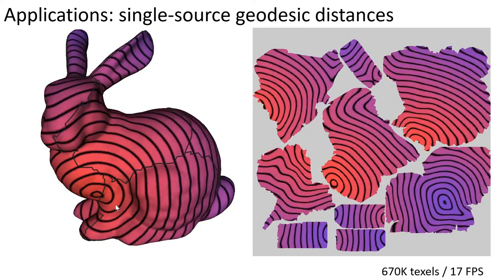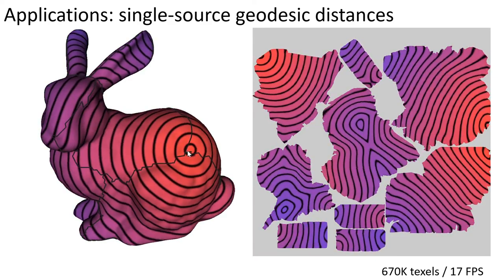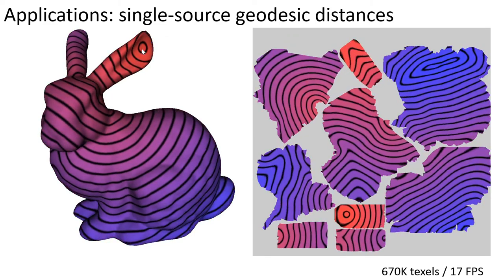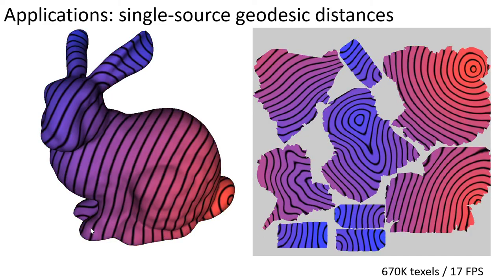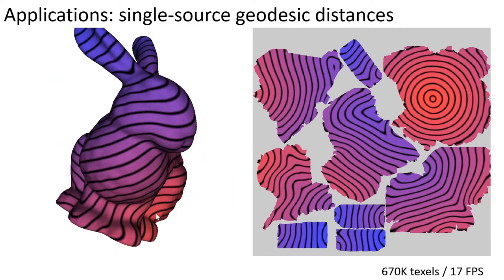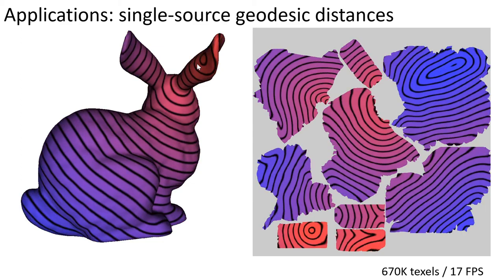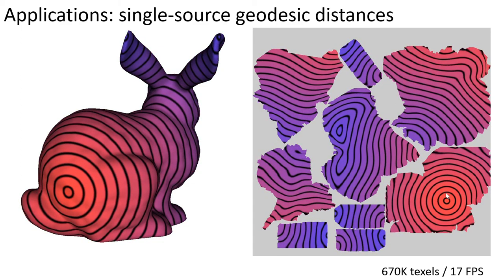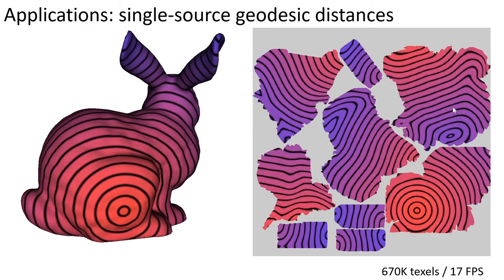We support geodesic distance computation using the heat method. Here, the user selects a point on the surface, and the solver computes geodesic distances to all other points. We visualize distances using red to denote points closer to the source, and blue to denote points further away. Note that the distances update smoothly, and there is little lag between the motion of the cursor and the rendering of the distance function.